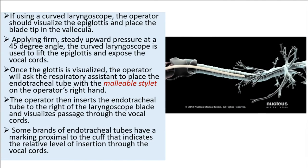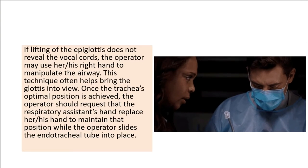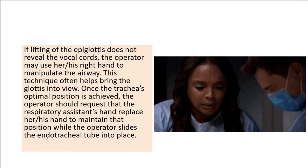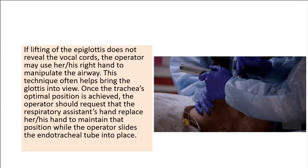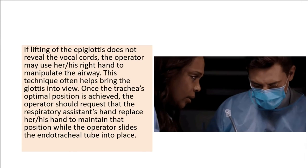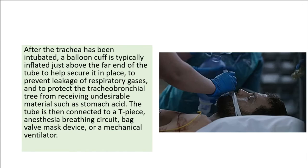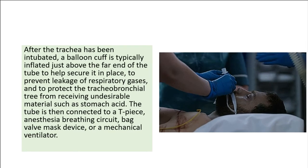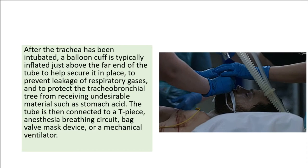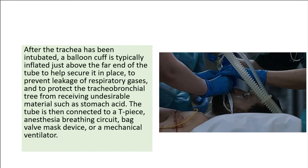Some brands of endotracheal tubes have a marking proximal to the cuff that indicates the relative level of insertion through the vocal cords. If lifting of the epiglottis does not reveal the vocal cords, the operator may use their right hand to manipulate the airway — a technique that often helps bring the glottis into view. Once the trachea's optimal position is achieved, the respiratory assistant's hand replaces the operator's hand to maintain that position while the operator slides the endotracheal tube into place. After intubation, a balloon cuff is inflated just above the far end of the tube to help secure it, preventing leakage of respiratory gases and protecting the tracheobronchial tree from undesirable material such as stomach acid. The tube is then connected to a T-piece, anesthesia breathing circuit, bag valve mask device, or a mechanical ventilator.